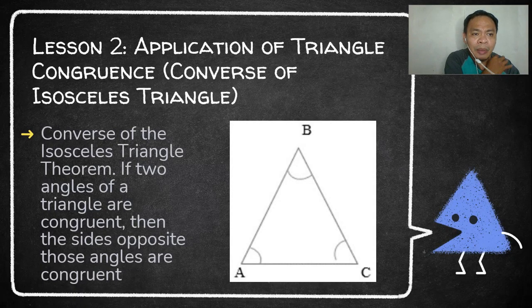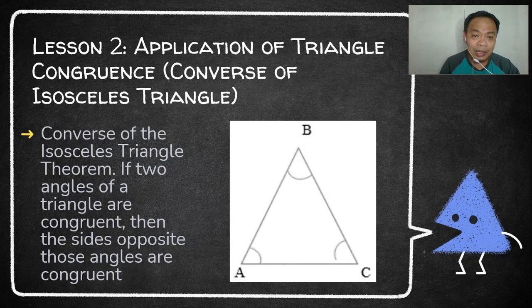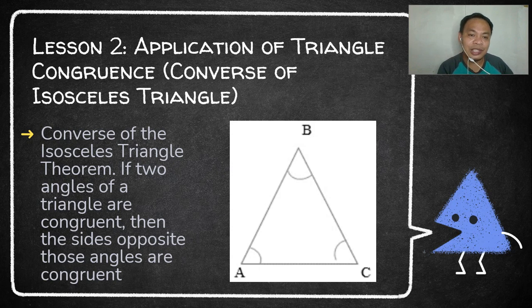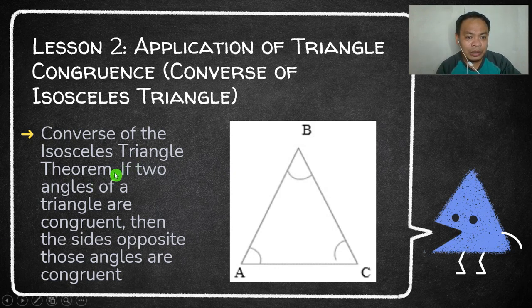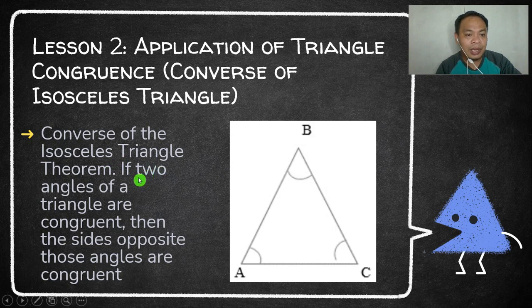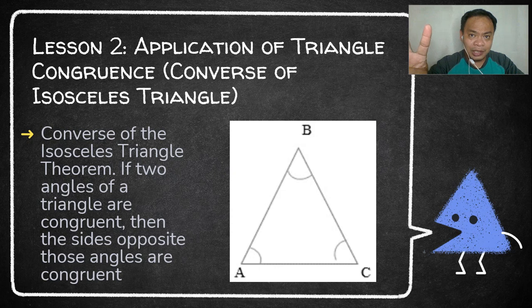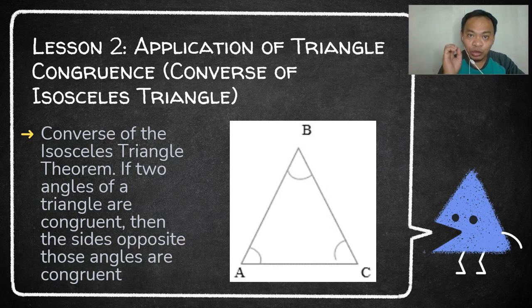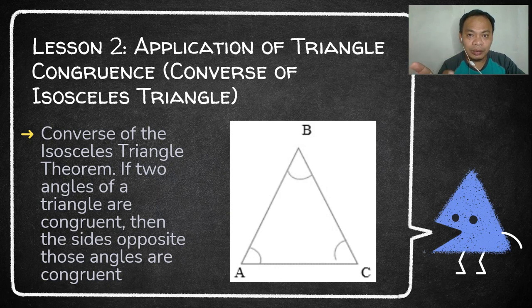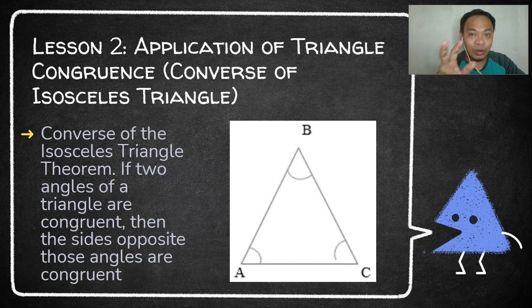Let's proceed to Lesson 2: Application of Triangle Congruence, the Converse of Isosceles Triangle. The converse of the isosceles triangle theorem states: if two angles of a triangle are congruent, then the sides opposite those angles are also congruent. Earlier in the isosceles triangle, two sides were congruent and the opposite angles were also congruent. In the converse, if there are two congruent angles, the opposite sides of those angles are also congruent.